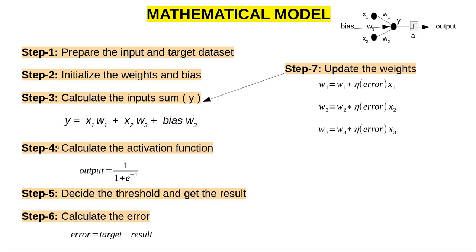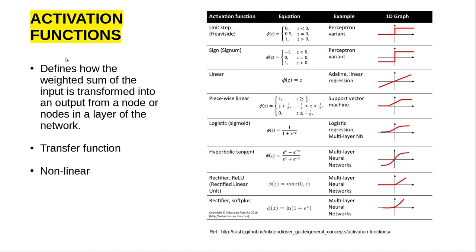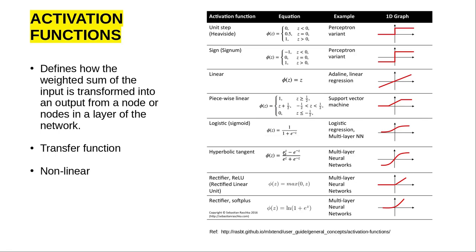Step four: calculate the activation function. An activation function defines how the weighted sum of the inputs is transformed into an output from a node or nodes in a layer of the network. This is also called a transfer function. This function is non-linear. There are many activation functions, as you can see here. Generally, after becoming familiar with them, you will understand which one to use in which situation — this comes from your experiments.